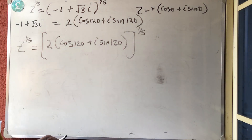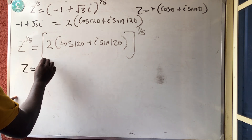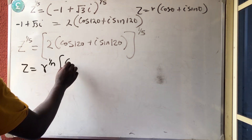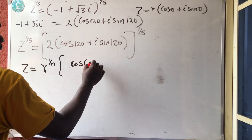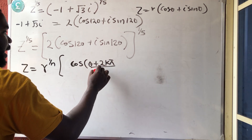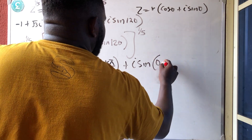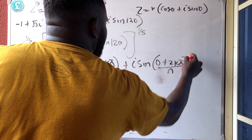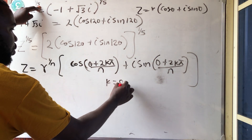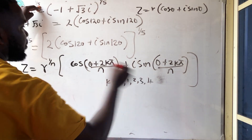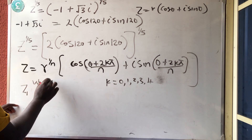You will now write out your formula: z is equal to R raised to power 1 over n, in bracket of cos(theta + 2k pi over n) plus i sine(theta + 2k pi over n). Now since my n is 5, my k will be 0, 1, 2, 3, and 4. You will now start the first one — let me call this W. W1 is when k is equal to 0.